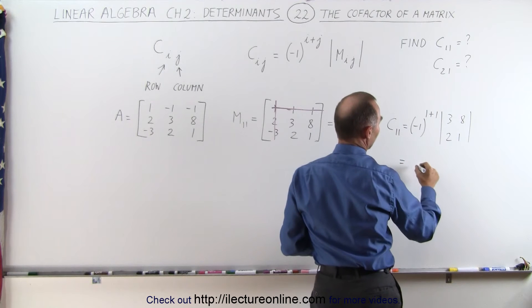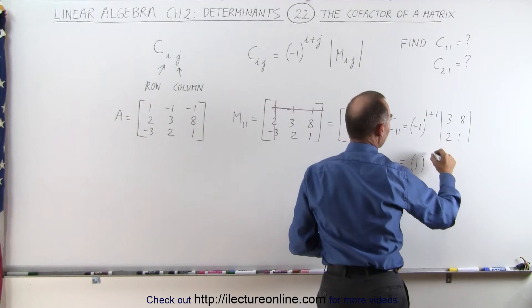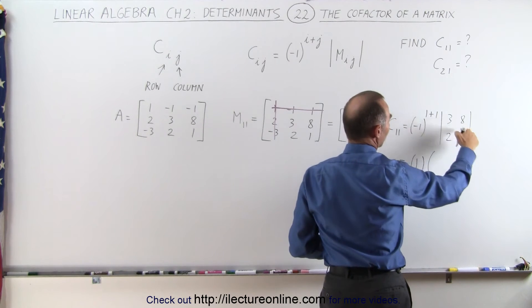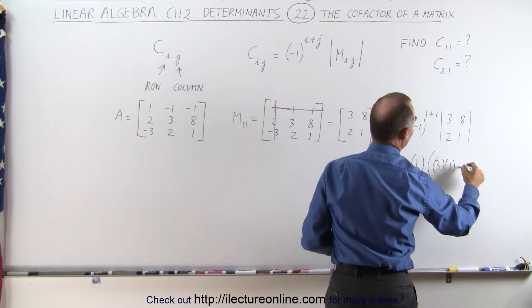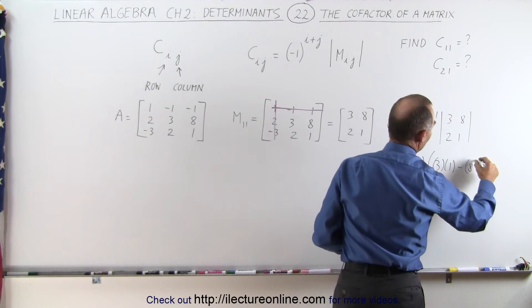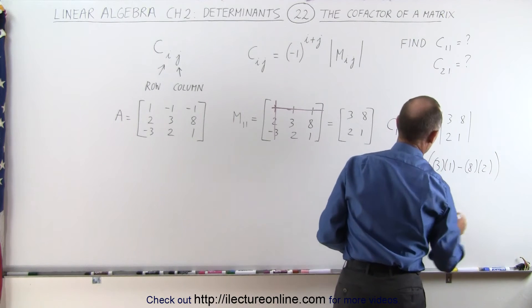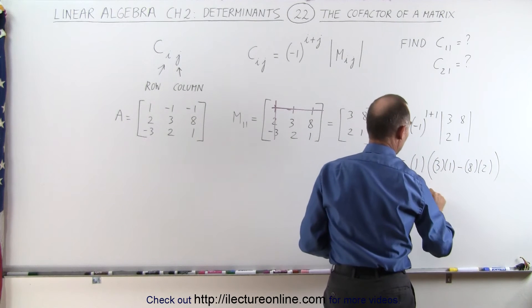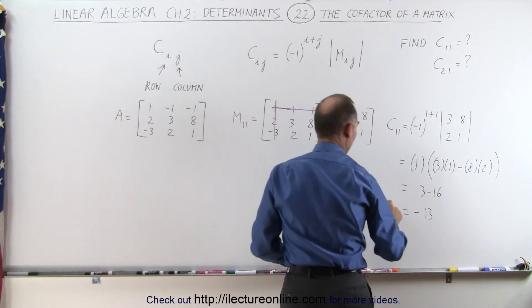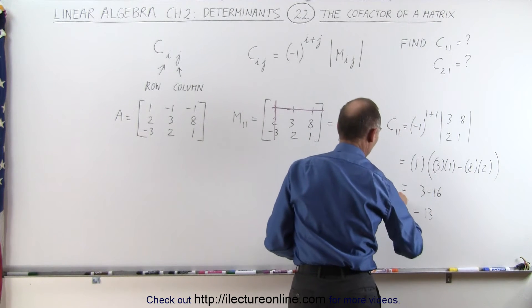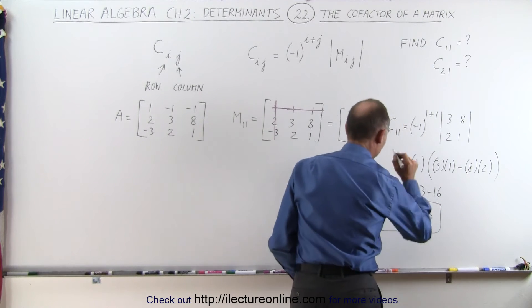This therefore becomes equal to a positive 1 times, and here you're going to multiply these diagonals, 3 times 1 minus 8 times 2, which is equal to 3 minus 16, which is minus 13, which means that the cofactor c11 equals minus 13.